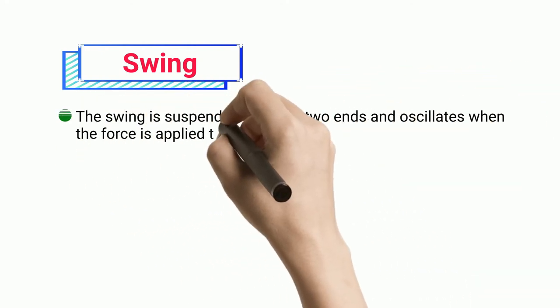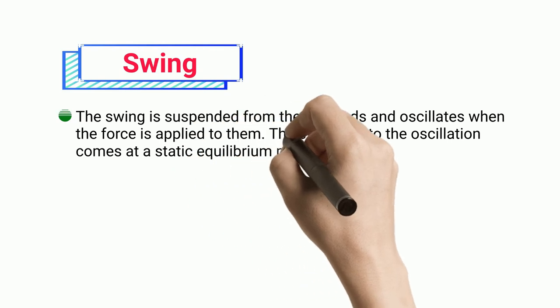Swing: The swing is suspended from the two ends and oscillates when force is applied. The swing comes to static equilibrium position, gradually reducing the angle of oscillation.